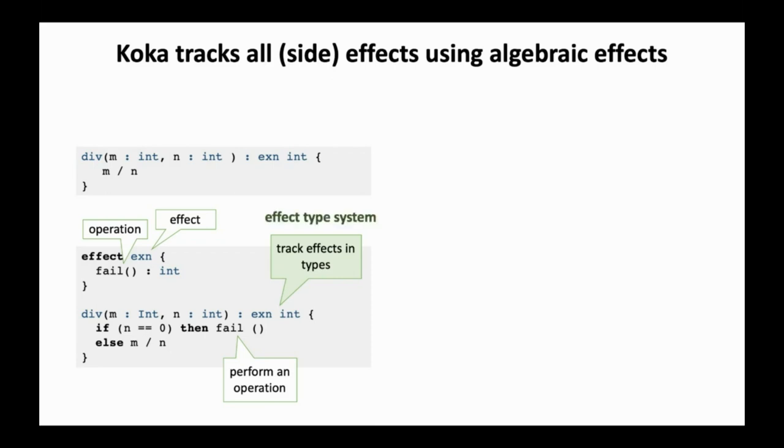Using algebraic effects, we can define the div function as this. We first define an effect exception, which has a single operation fail. Now, in the definition of div, when the second argument is zero, we perform the operation fail. Importantly, we keep track of the effects the function may perform in its type signature. Such a system is called an effect type system. And in such a system, we can guarantee that all algebraic effects are handled properly. Notice that the perform does not specify explicitly how this fail operation should be handled. In algebraic effects, the semantics of operation is given by effect handlers.